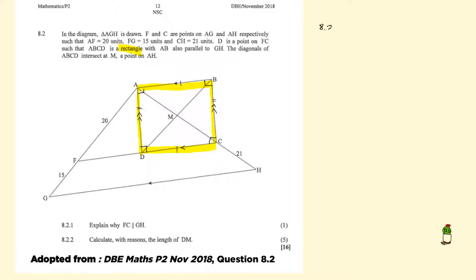So question 8.2.1, we are simply going to state that DC is parallel to AB. And this is the properties of a rectangle. This is opposite sides of a rectangle.